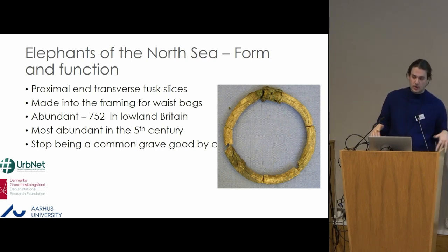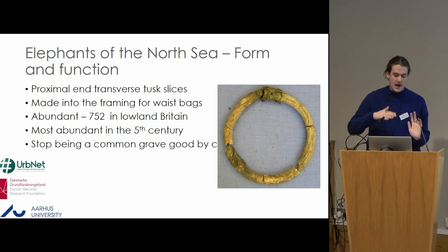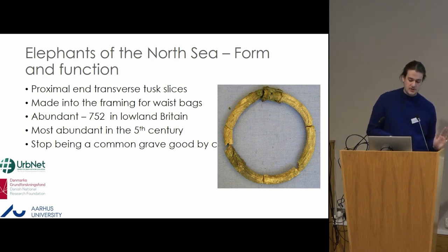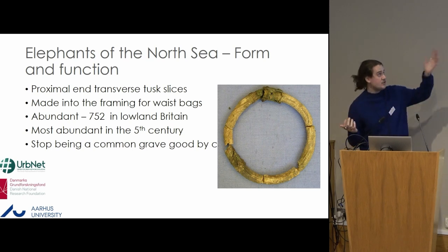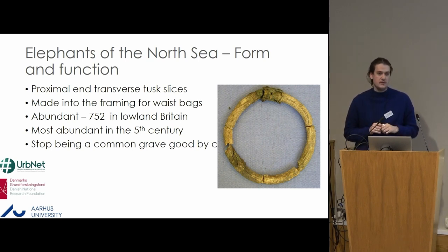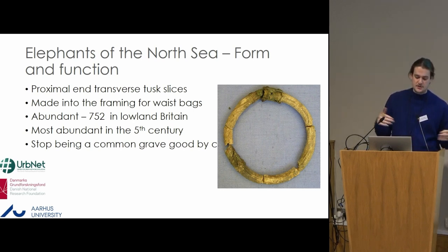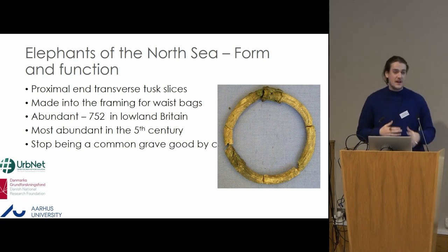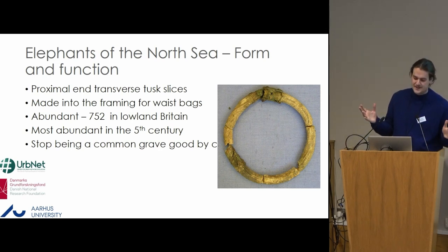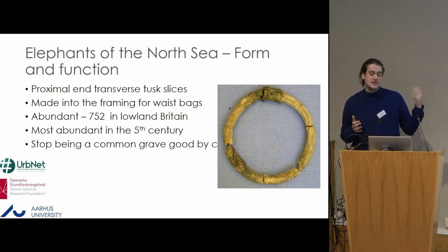As ivory is the focus of my PhD, we'll start there. Elephant ivory appears in one form north of the Alps in the fifth, sixth, and seventh centuries: a transverse slice from the top of the tusk used to form the frame of a waist bag. There are 752 of these in lowland Britain, which is an amazing amount — if you think each elephant has two tusks, that's around 375 elephants.